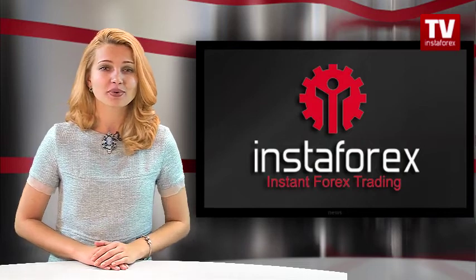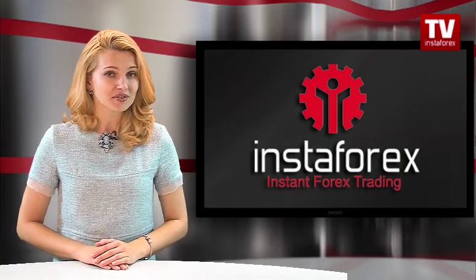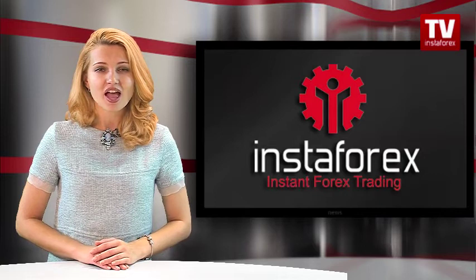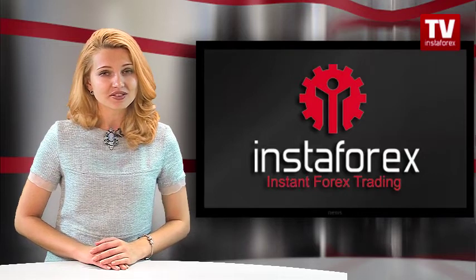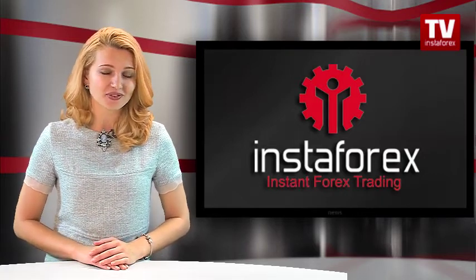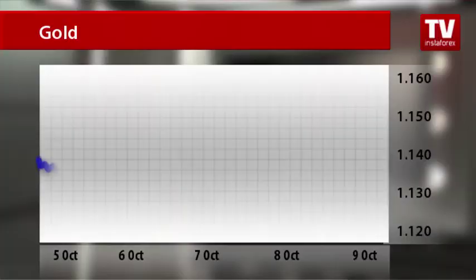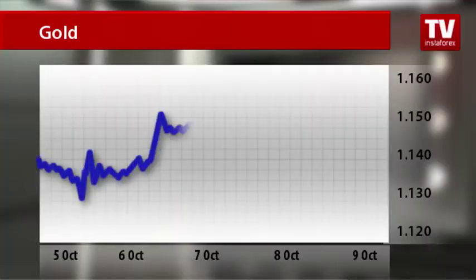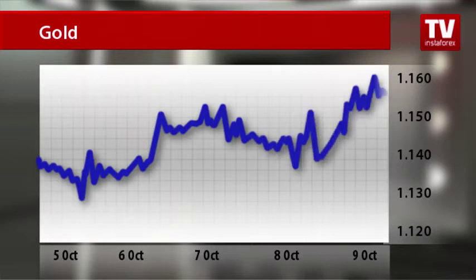Gold managed to go up thanks to uncertainty over the rate hike by the Fed. As a result, the US dollar went down and gold became more lucrative for investors. December gold futures jumped $11.60 to close at $1,155.90 per troy ounce, the highest level since August 21. During the week, the yellow metal added 1.7%.